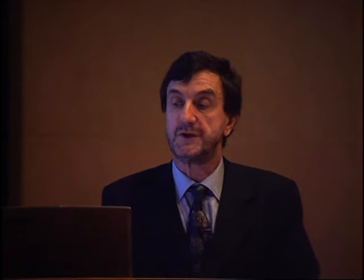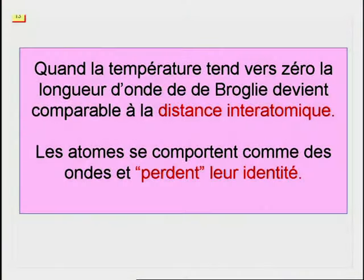En particulier, on trouve que quand la température tend vers zéro, la longueur d'onde de De Broglie devient comparable à la distance moyenne entre les atomes. Dans ces conditions, les atomes se comportent comme des ondes et perdent leur identité. Cela est une des conséquences importantes de la mécanique quantique.